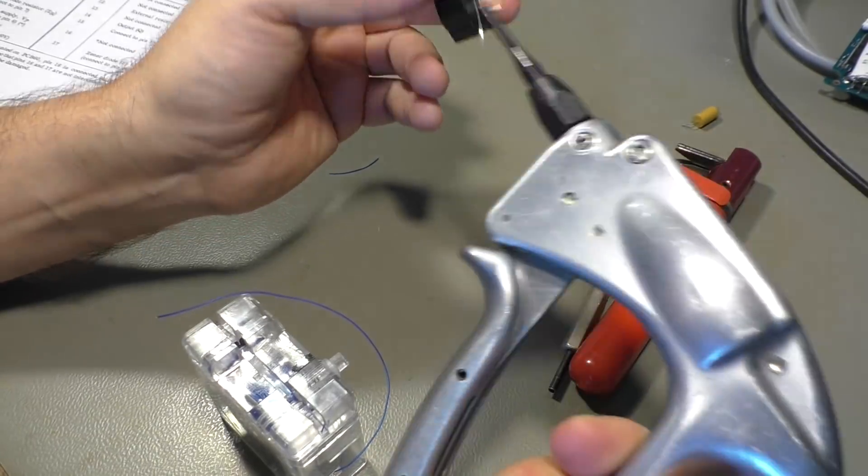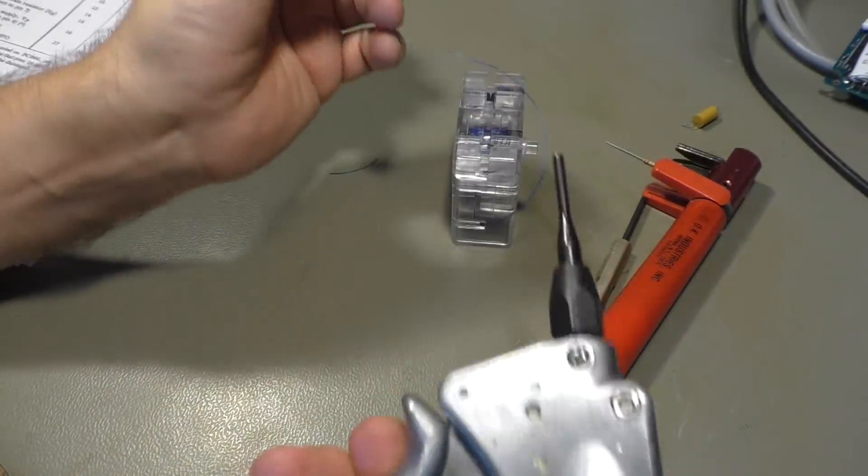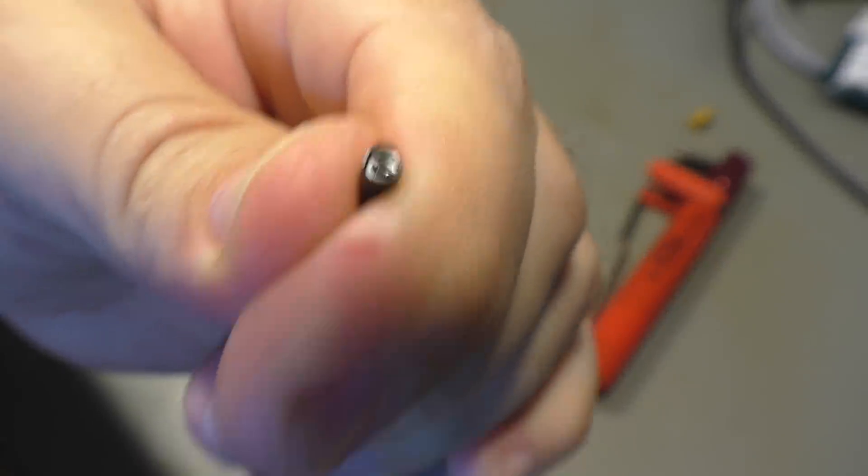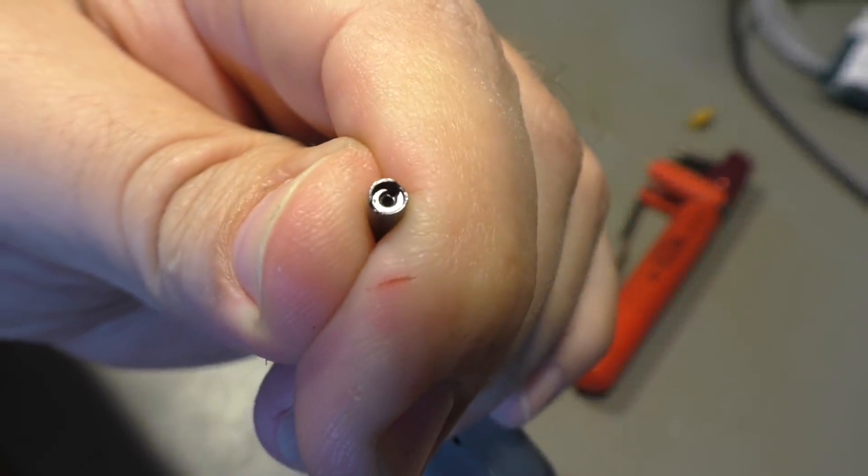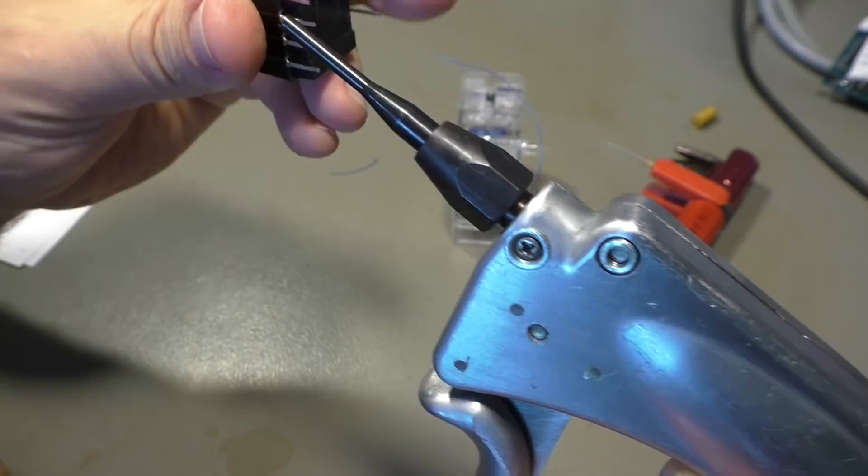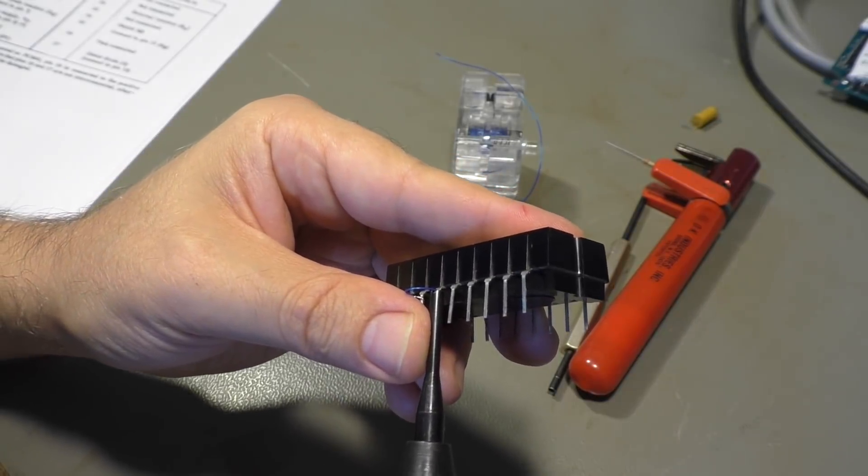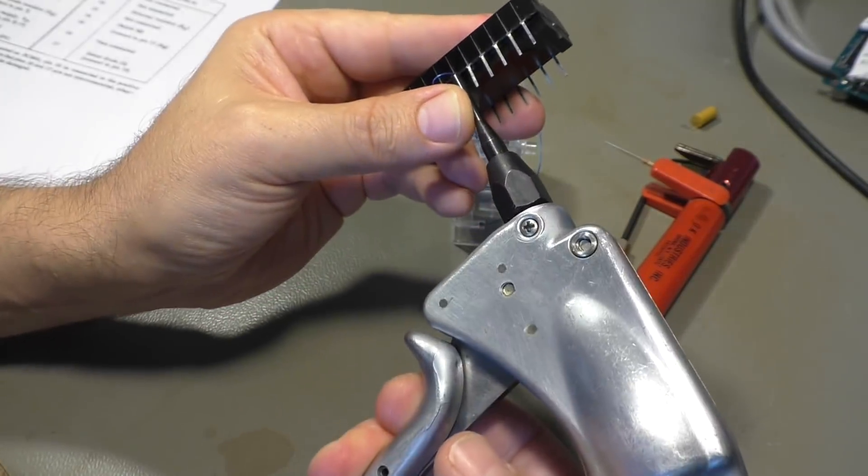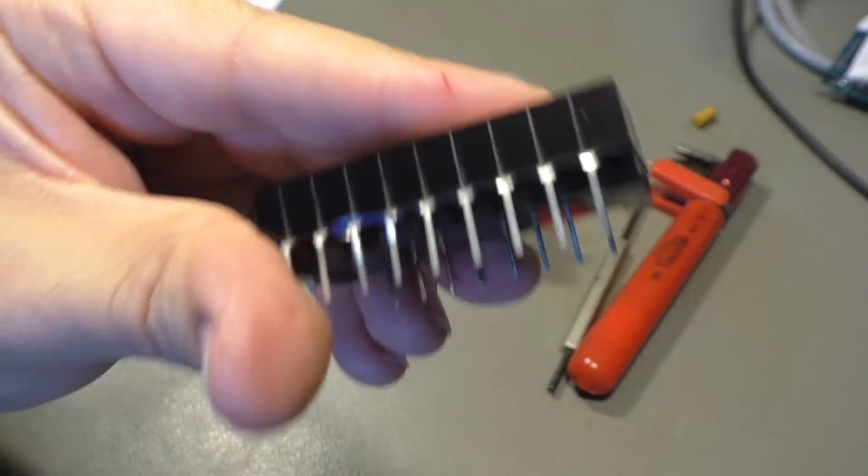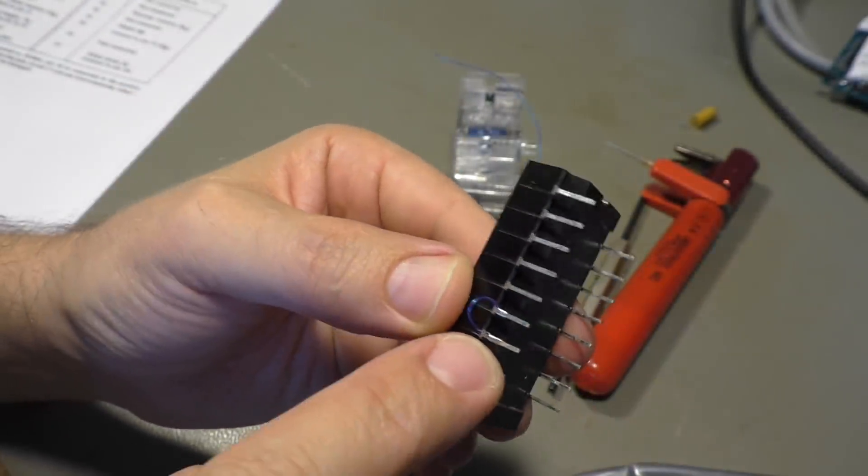Of course we also have other wrapping tools like this one. It's a manual tool but you don't have to spin it, it spins by itself. You see it here when I push the handle down. The function is exactly the same, you have to thread the wire in the smaller hole and use the bigger hole for the pin, and then you simply squeeze it and the wire is wound up perfectly. It looks even better than my manual wrap here.